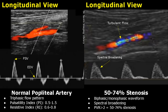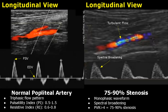In 50 to 74 percent stenosis, a biphasic or monophasic waveform is seen along with spectral broadening, and the peak velocity ratio is more than 2. In stenosis between 75 to 90 percent, a monophasic waveform will be seen, spectral broadening will also be seen, and the peak velocity ratio will be more than 4.